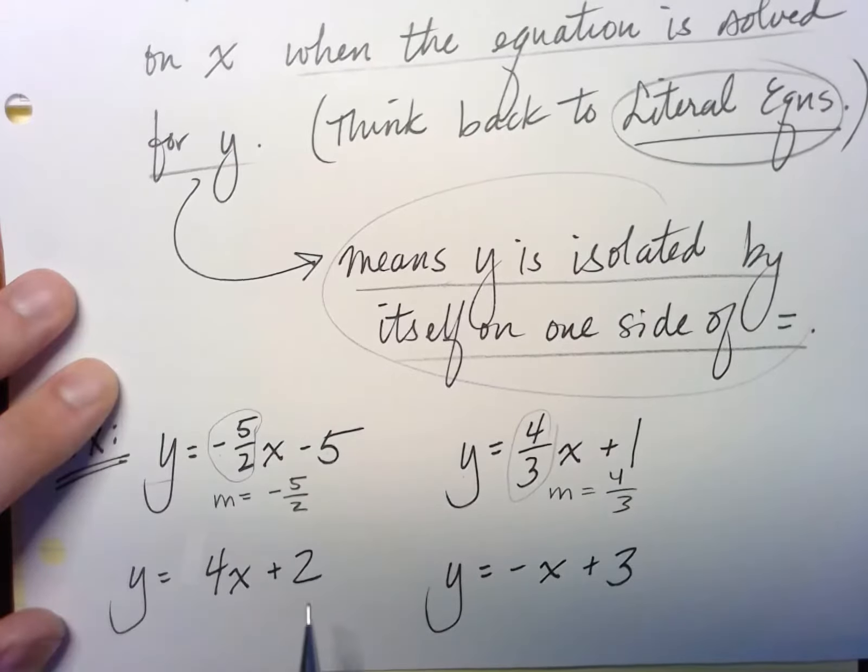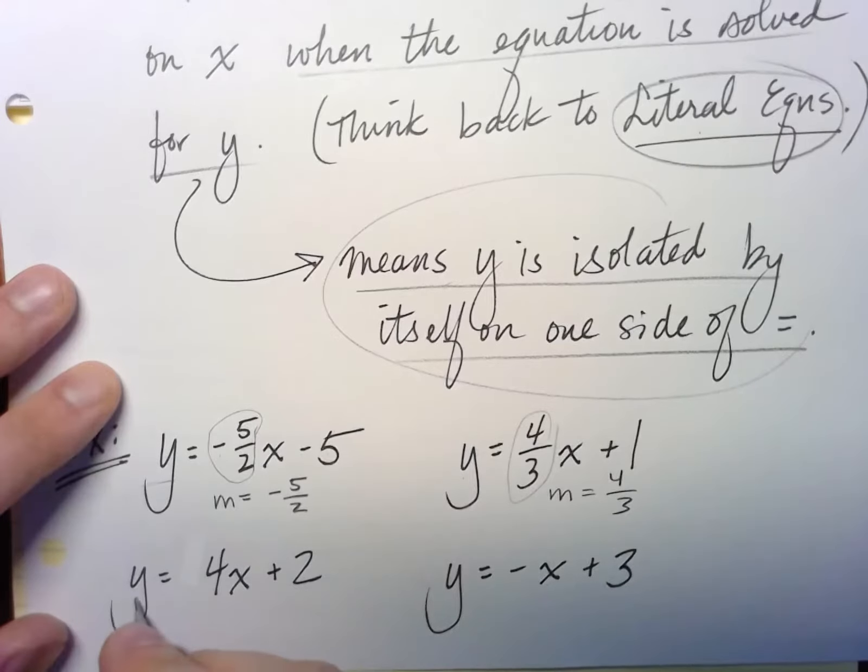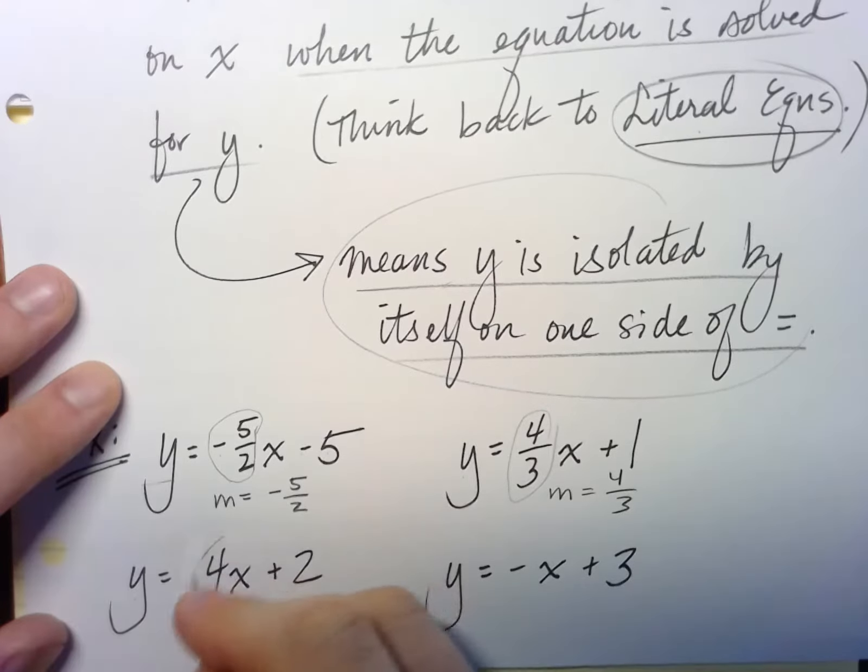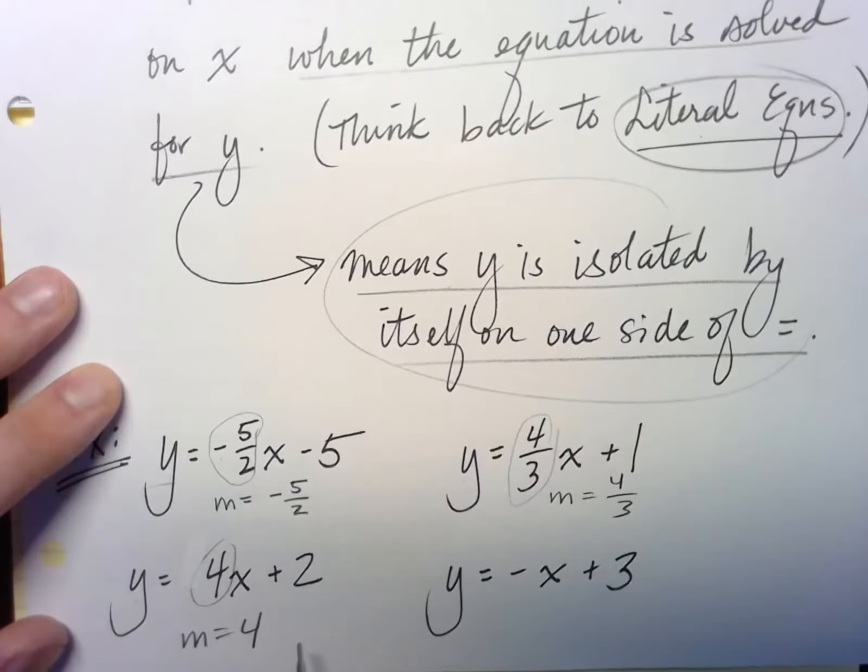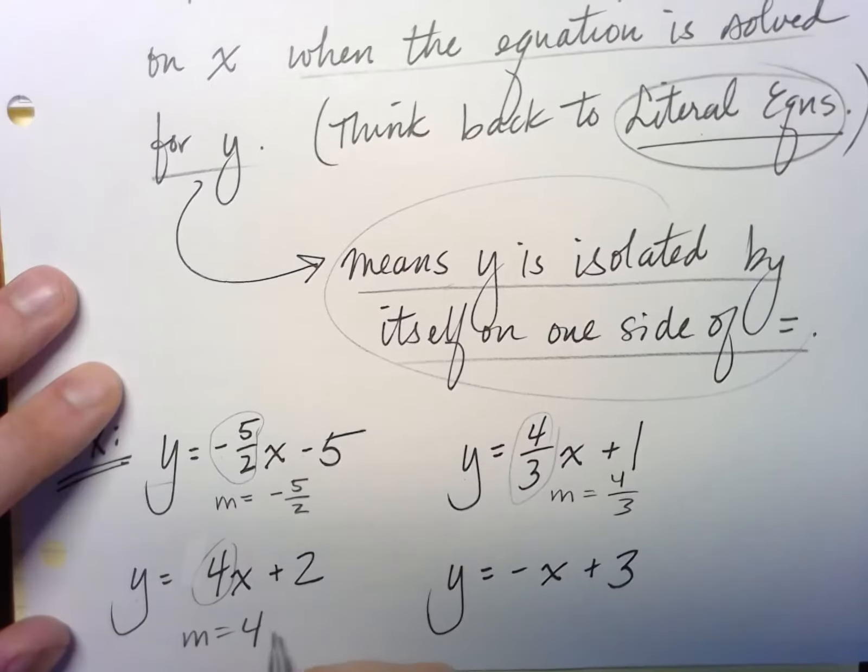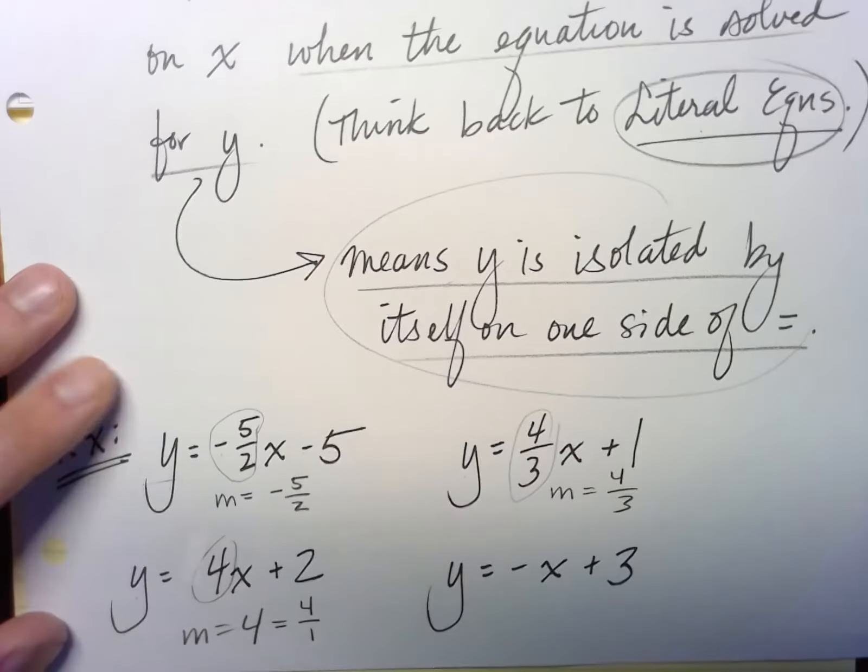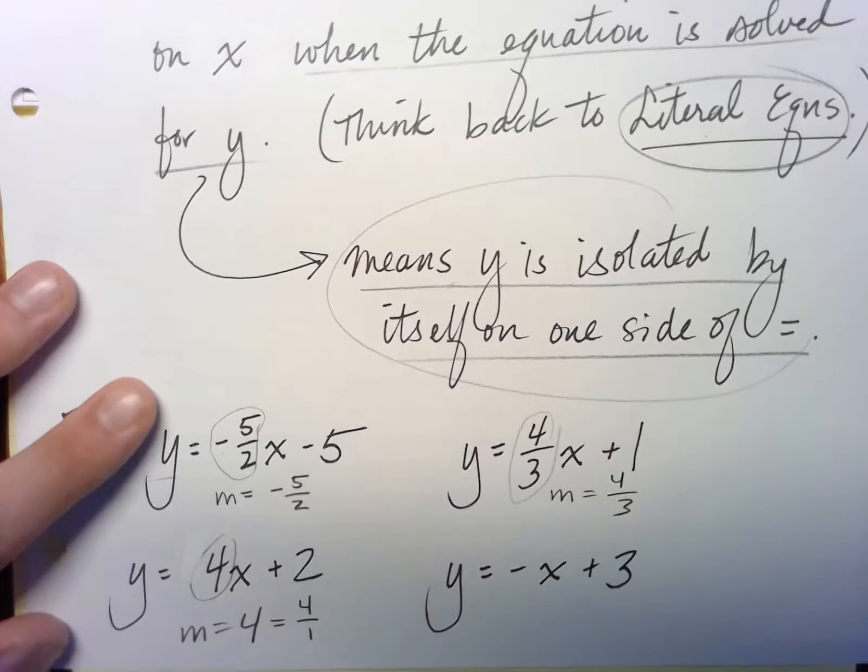Here, y equals 4x plus 2. Again, it's in slope-intercept because y is isolated, so that's my slope. So my slope is just 4, and if you want to think about this in terms of rise over run, it's 4 over 1. So that'll be a useful little trick we end up using a lot.